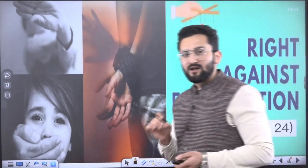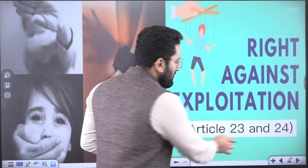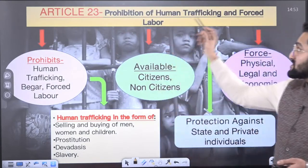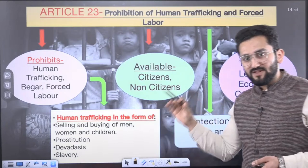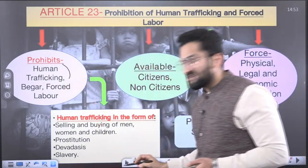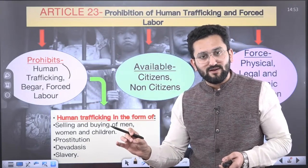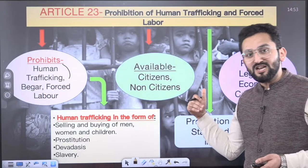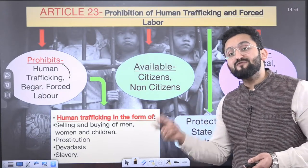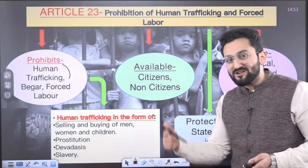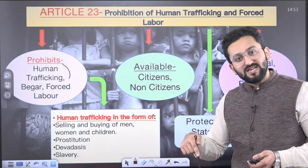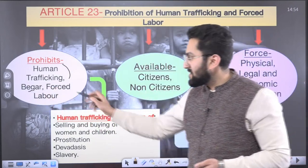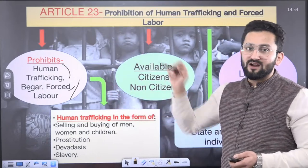Now we need to talk about the right against exploitation. Here we talk about two articles only — Article 23 and Article 24. Article 23 says prohibition of human trafficking and forced labor. Human trafficking is the buying and selling of humans. If such a thing is happening with you, it is against your fundamental right as mentioned under Article 23. The punishment for such an offense is not mentioned in Article 23 — for that, you need to refer to a specific law made by Parliament. Apart from this, bonded labor and forced labor are also prohibited under Article 23.